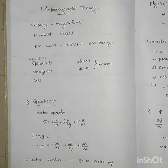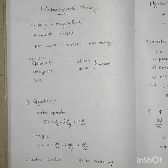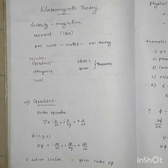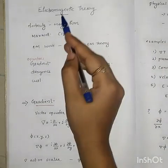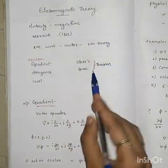We are going to the next chapter: Electromagnetic Theory. This is the fourth module, the second chapter, Electromagnetic Theory.